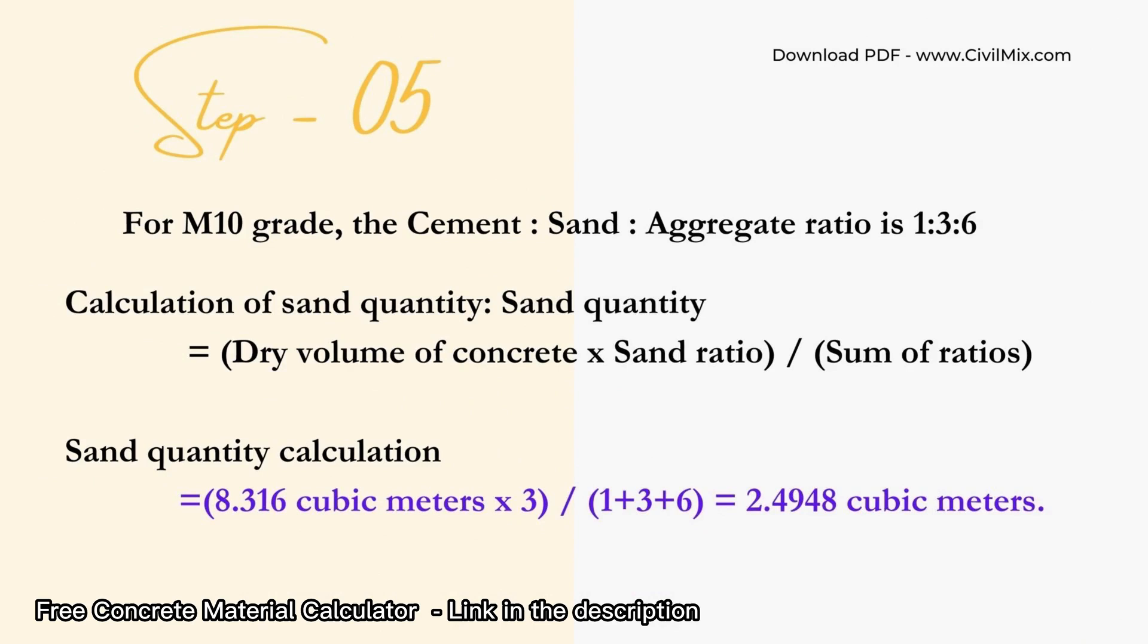The next step is to calculate the quantity of sand required for our concrete slab. We use the same formula as before, but this time we substitute the sand ratio, which is 3 for M10 grade. By substituting the values in the formula, we get the sand quantity required as 2.4948 cubic meters.